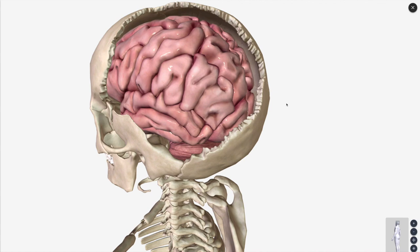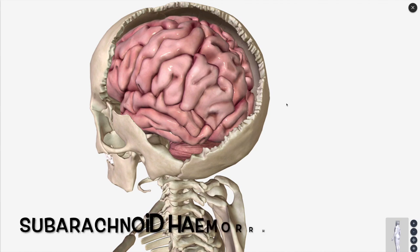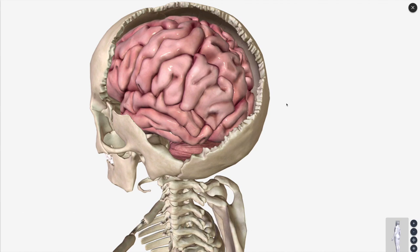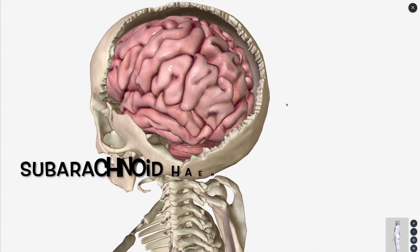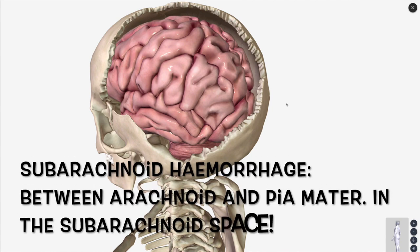The third hematoma or hemorrhage we want to talk about is the subarachnoid hemorrhage. That's going to occur between the arachnoid and the pia mater. This is your subarachnoid space.